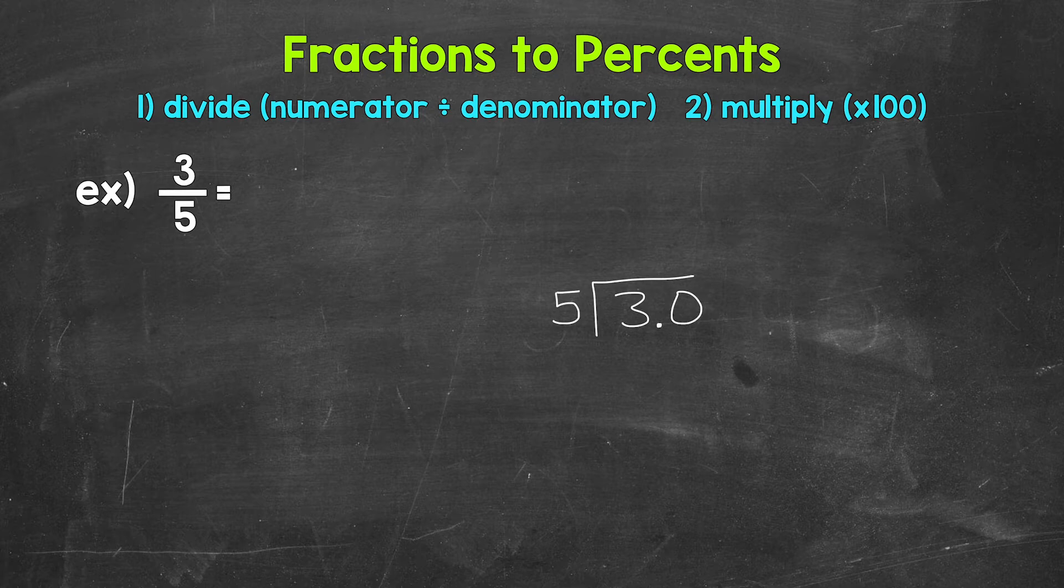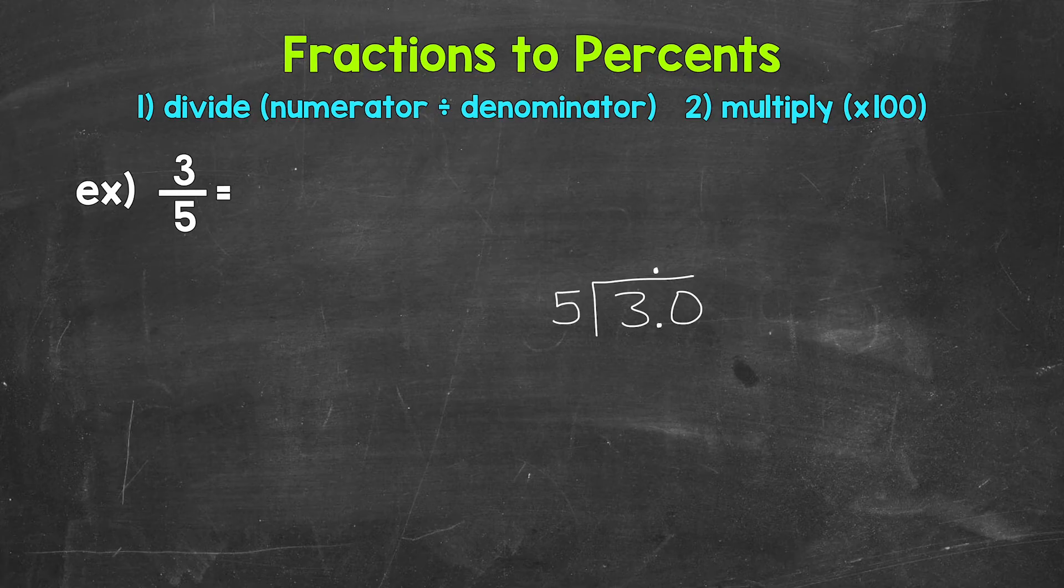Once we have the decimal and the zero, bring the decimal straight up into where the quotient, the answer, will be. And now we can think of this as 30 divided by 5, which is 6. So we put the 6 above the zero.